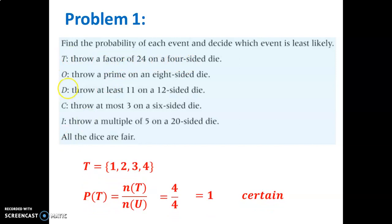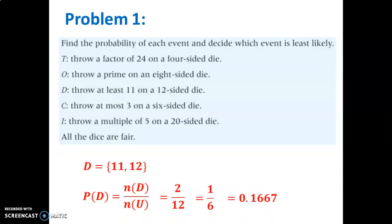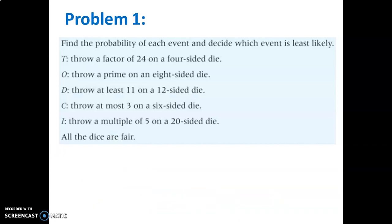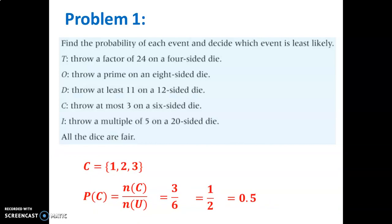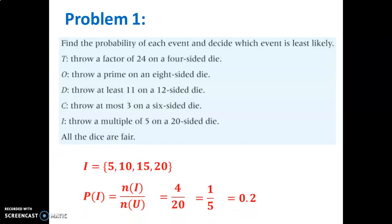Check your answer for problem one. Now try the next parts — O, D, C, and I — pausing to attempt each before checking the answer shown. This is basic probability using sample spaces and the probability formula.